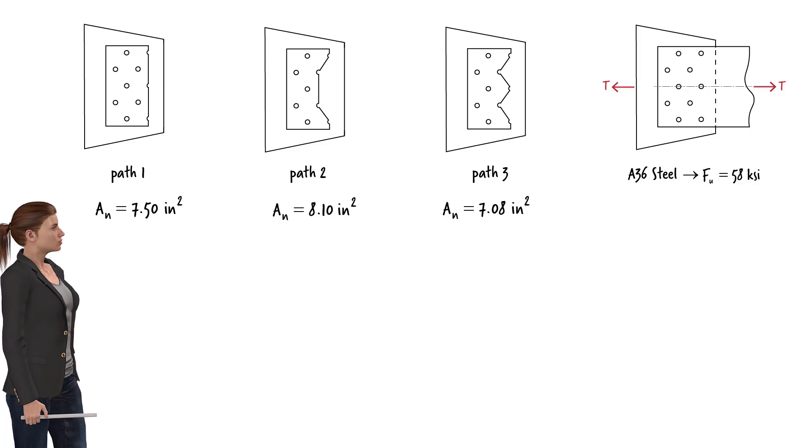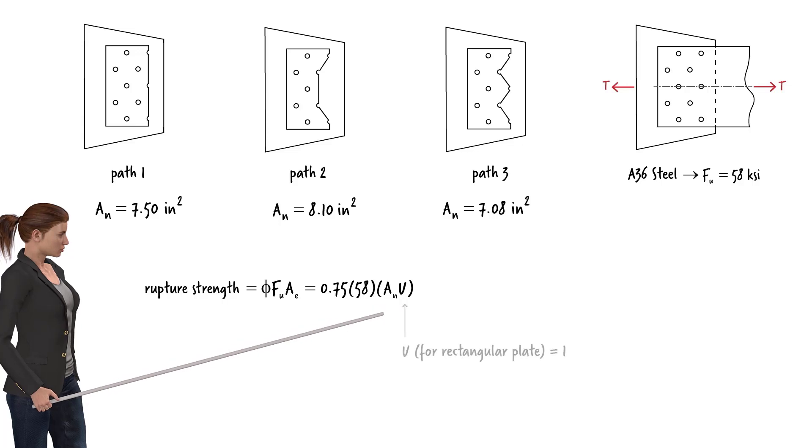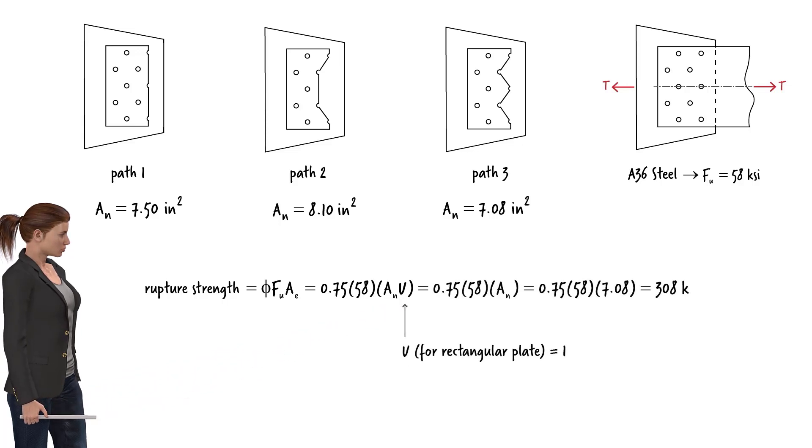Therefore, the rupture strength for the tension member can be written as... For rectangular plates, the shear lag factor U equals 1. Hence, the rupture strength for the tension member is 308 kips.